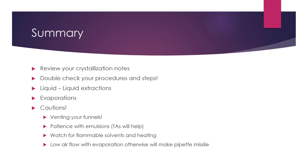If you form an emulsion, just be patient — there are things we can do to help speed up the separation, and your TA can point those out. You're going to be heating some things up, so be careful of flammable solvents and your working environment. Pay attention to what's going on around you. Especially when doing the evaporation, use a low airflow — otherwise you're going to make those pipette missiles we talked about earlier.